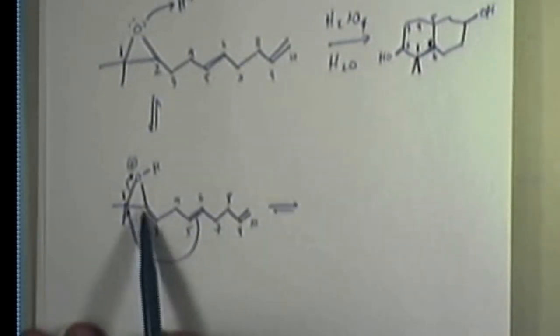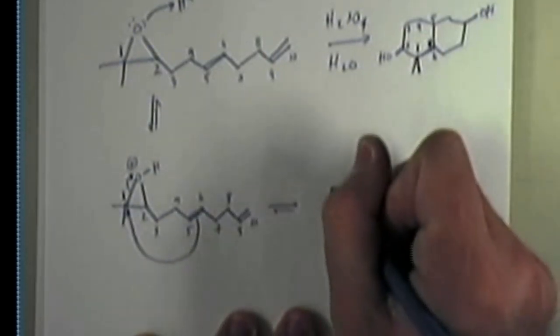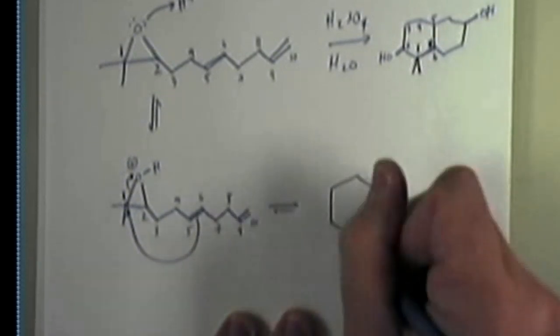Now, that might not be super obvious, but you can see I've numbered these. One, two, three, four, five, six. So that's going to form a six-membered ring. Okay, so I'll draw a six-membered ring, and I'll put my carbon-1 right down here.